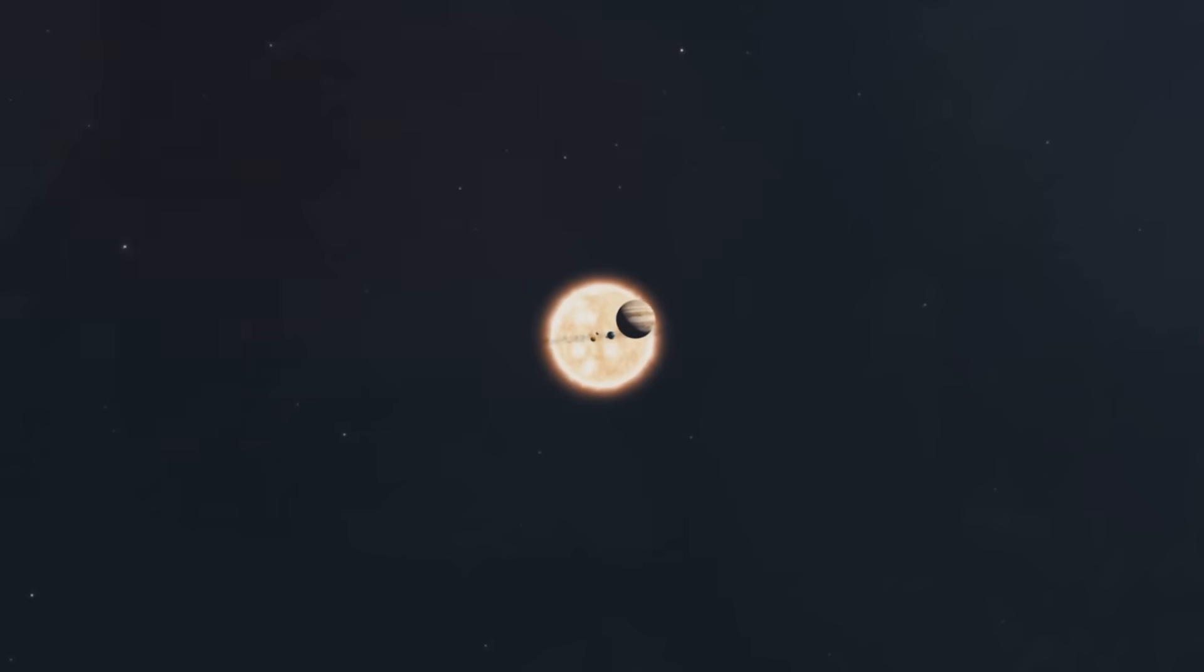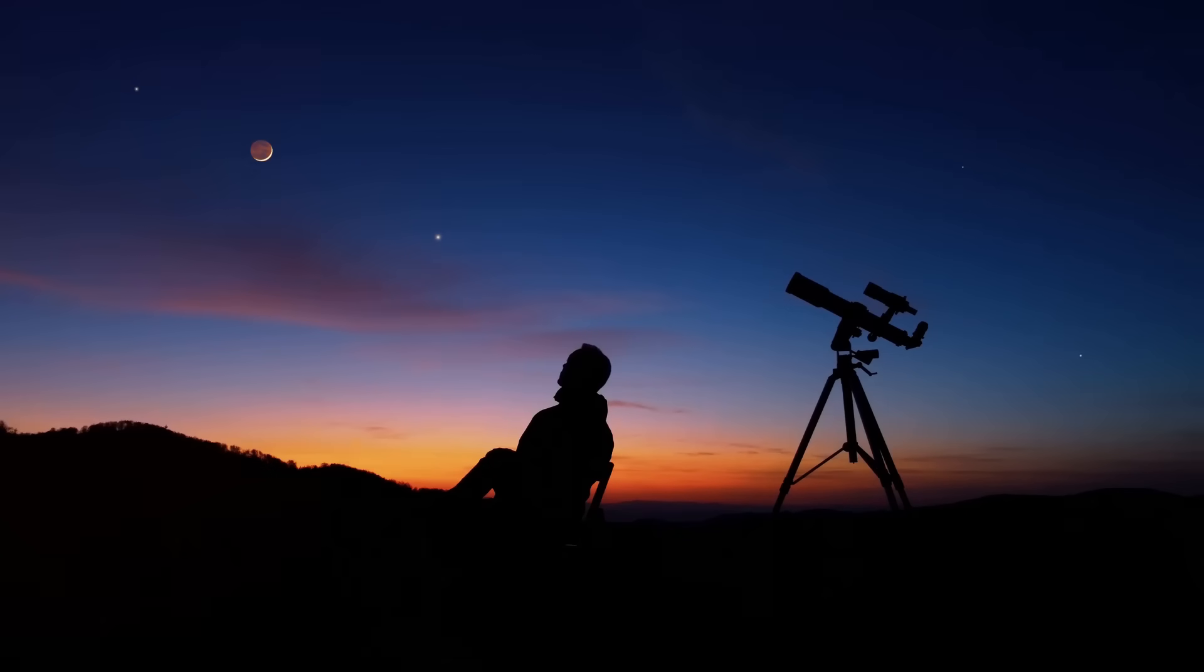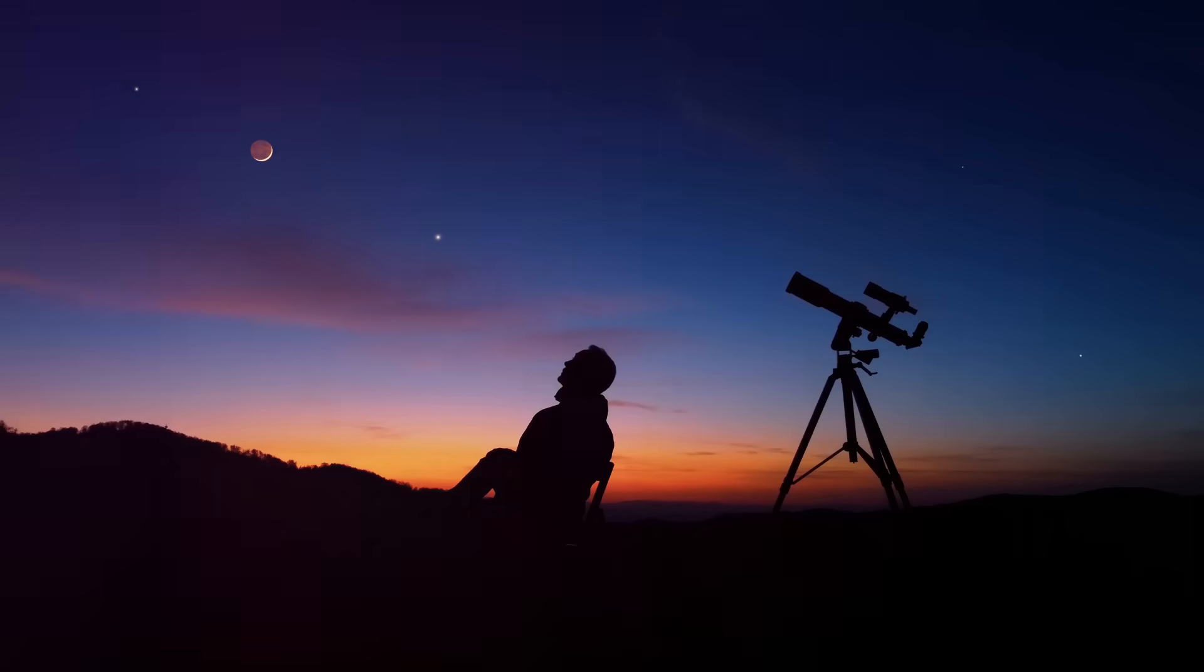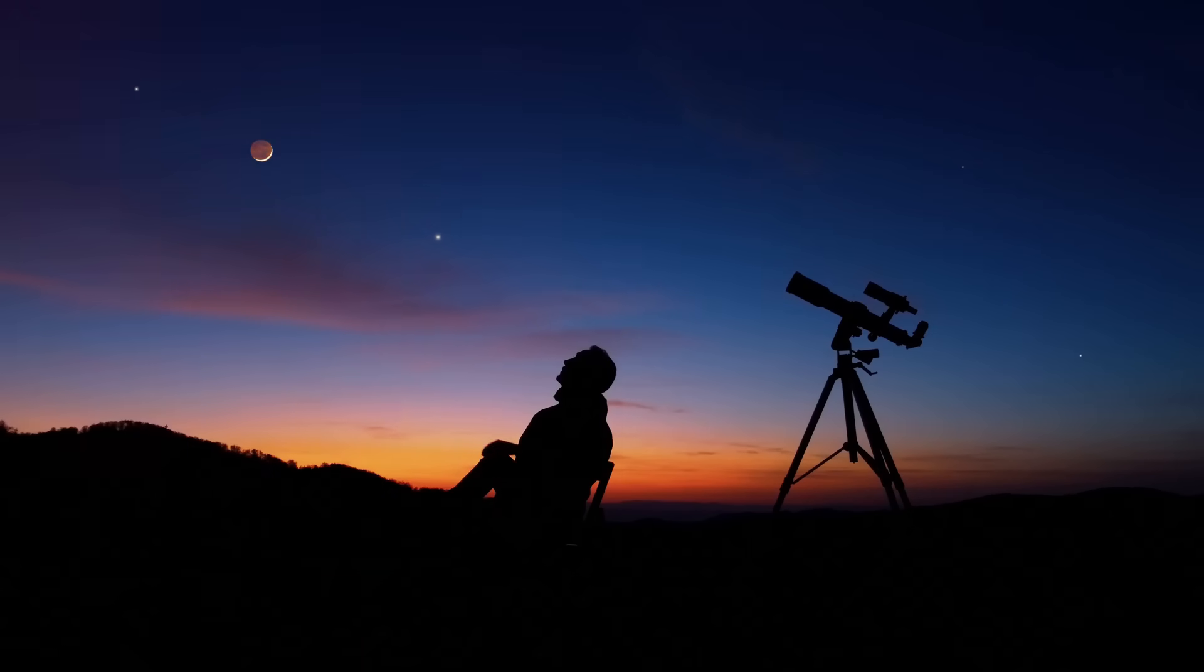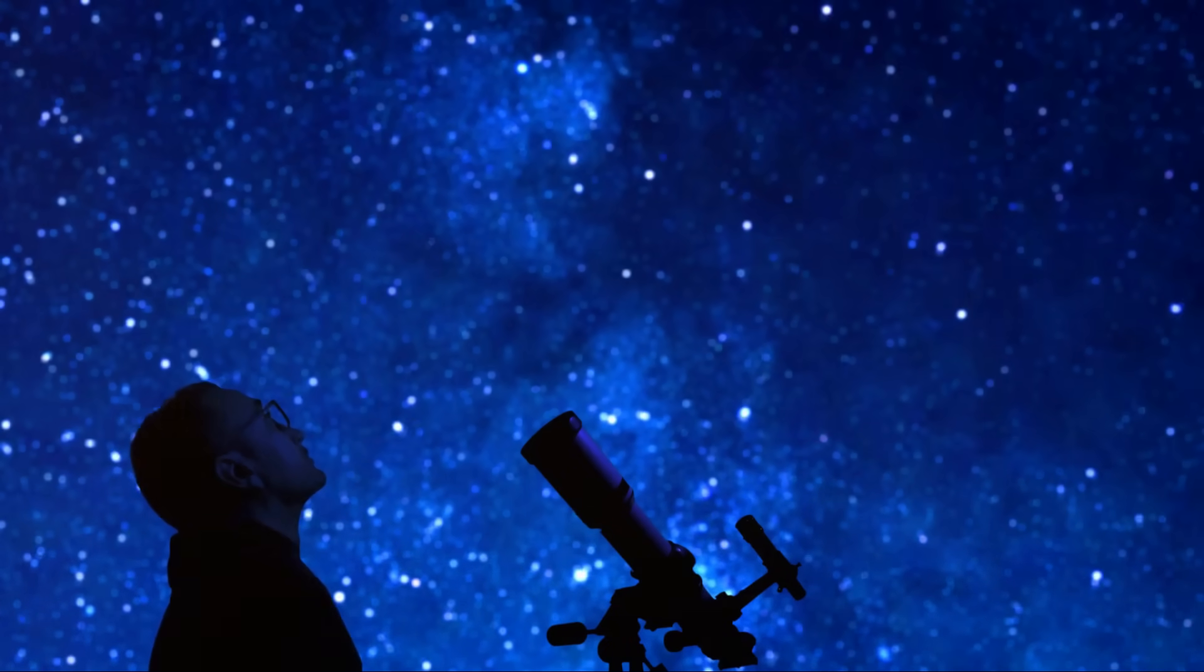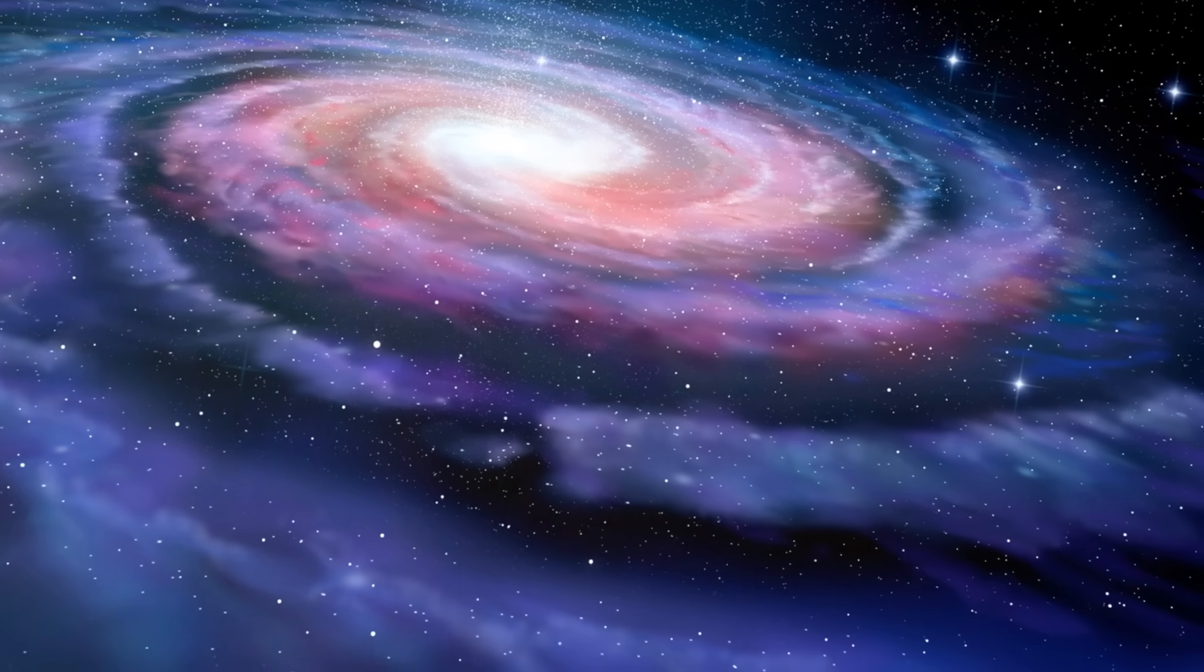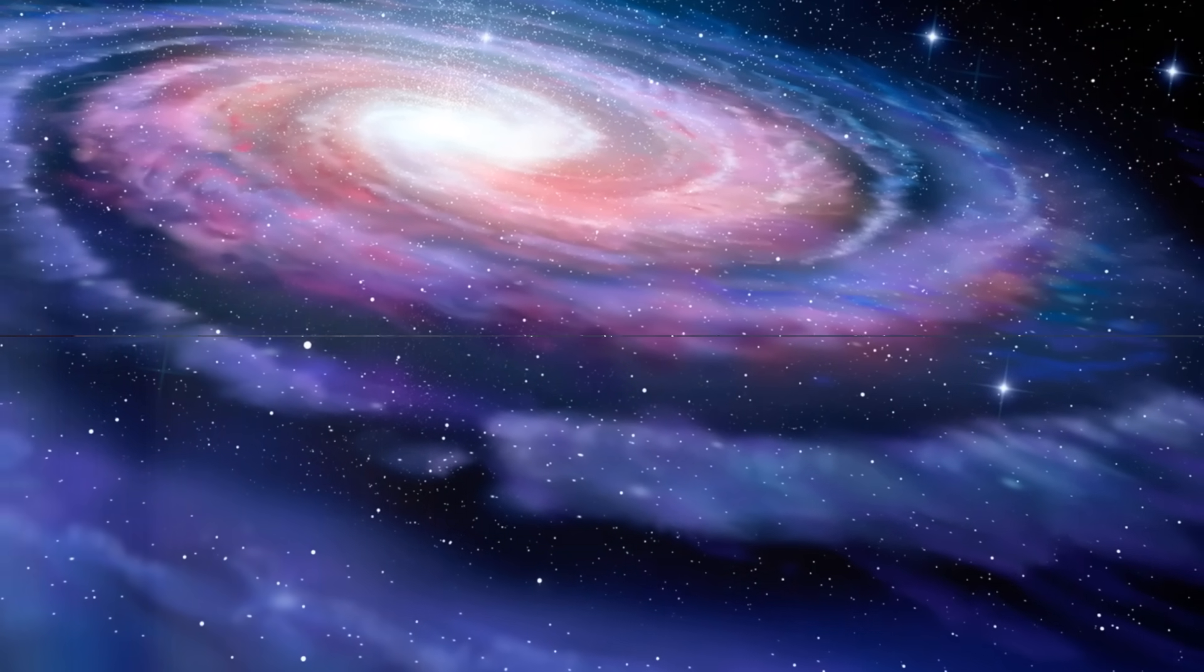So, the next time you look up at the night sky, remember that there's more to our solar system than the planets and the sun. There's a hidden tail trailing behind us, marking our path through the cosmos. And it was a small spacecraft millions of miles away that helped us discover it. Thanks to IBEX, we now have a new understanding of our place in the universe.